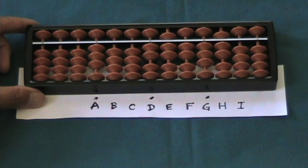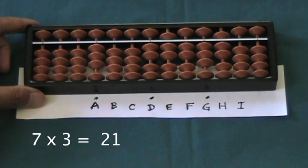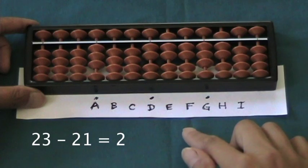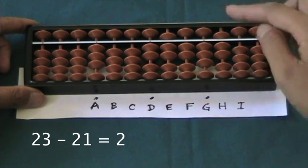Now, we subtract the 21, that's 3 times 7, from the 23 on rods F and G.